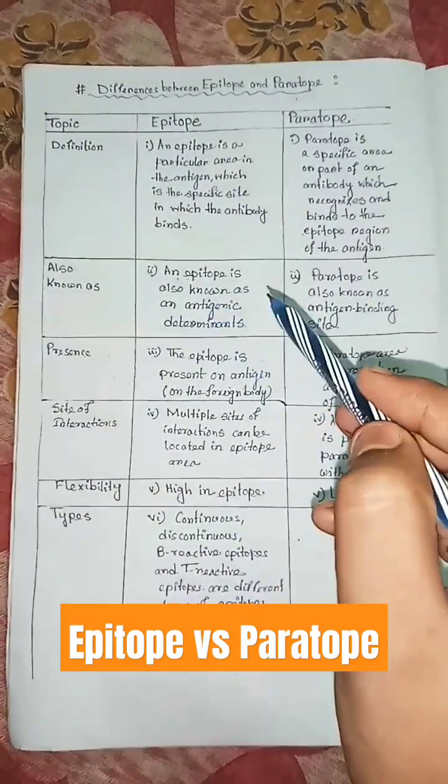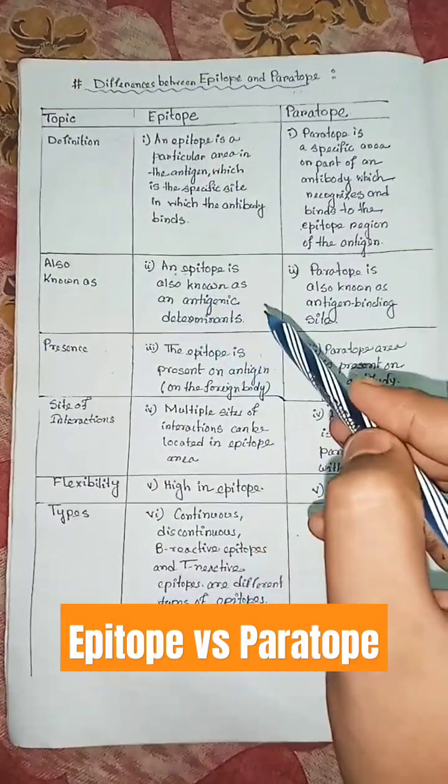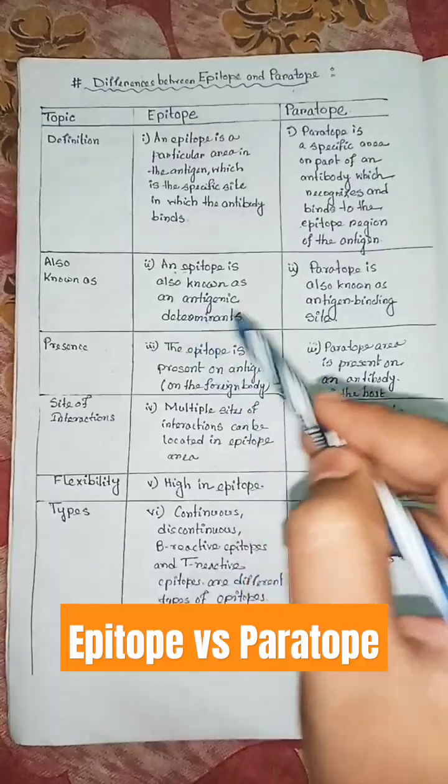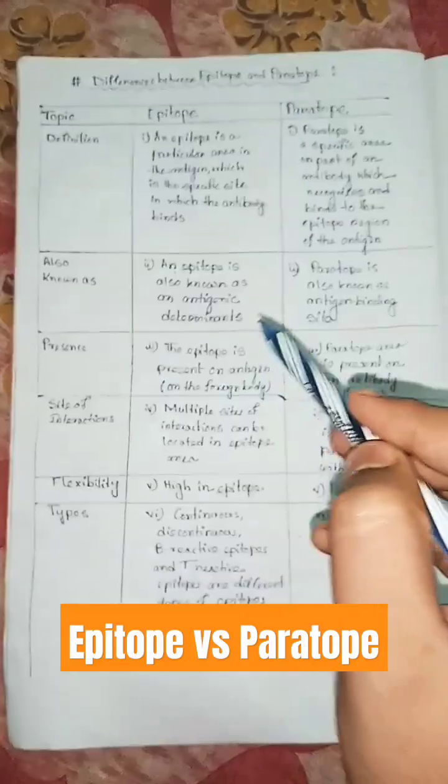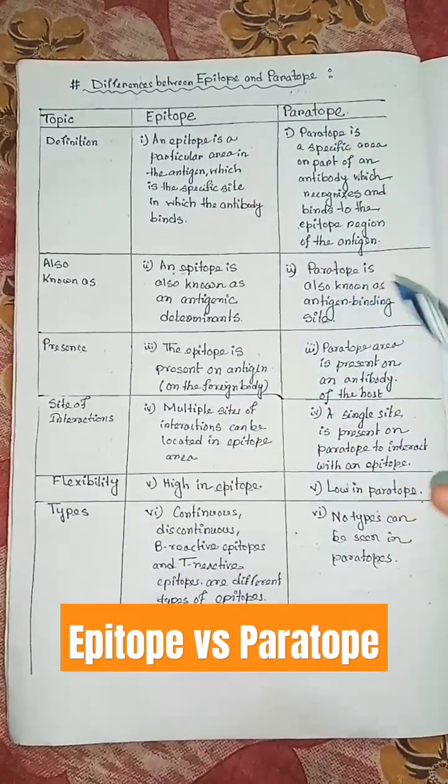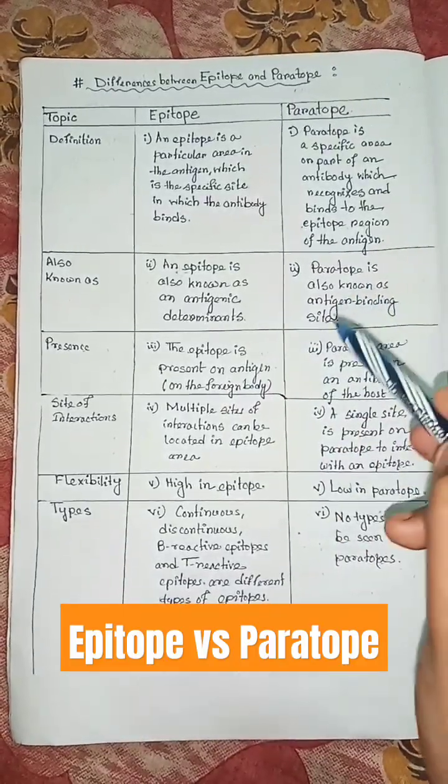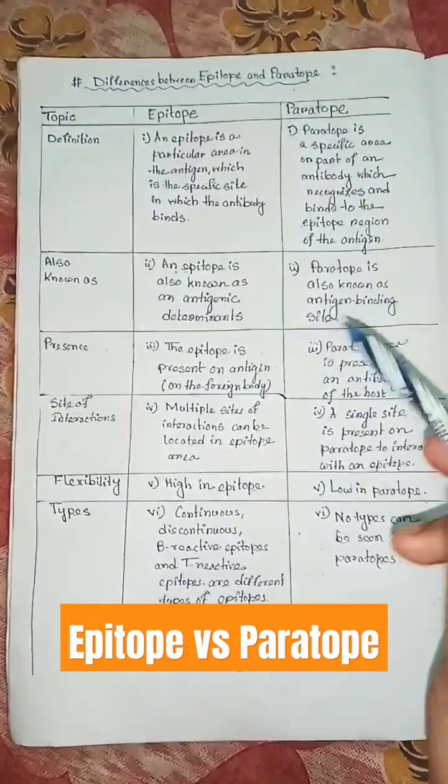An epitope is also known as an antigenic determinant. A paratope is also known as the antigen binding site.